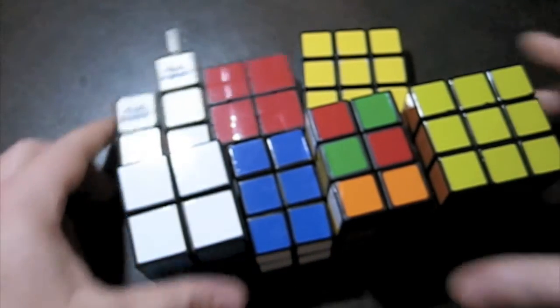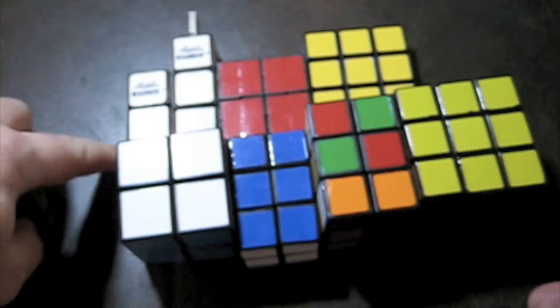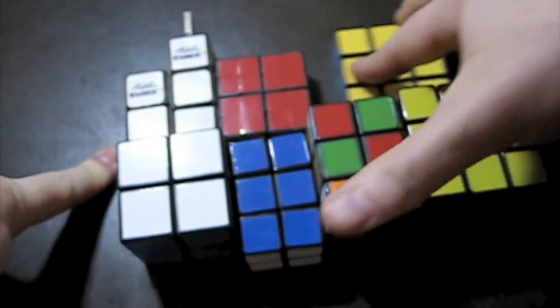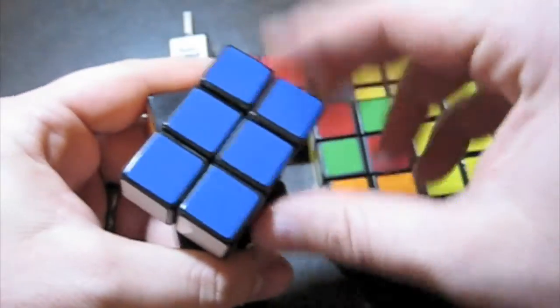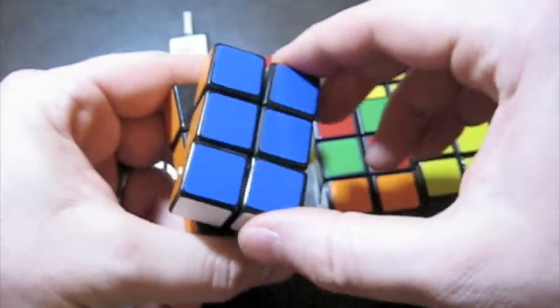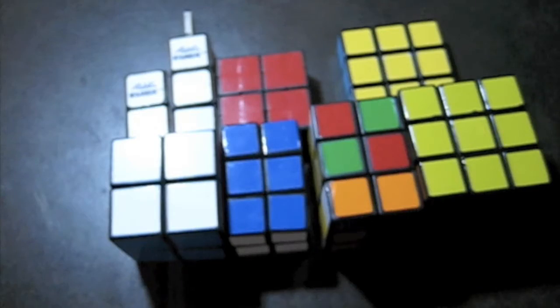So the only ones I'm really missing are the 1x1x1 and the 1x2x3, which is just one layer of this guy. It would look like this top layer I'm spinning here. So once I get those two, I'll have them all. I'm excited about that.